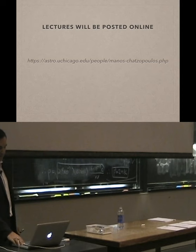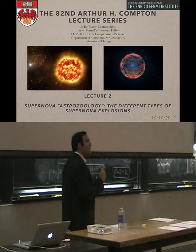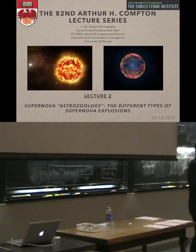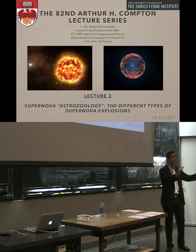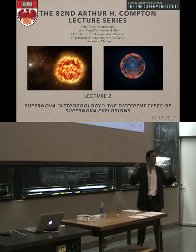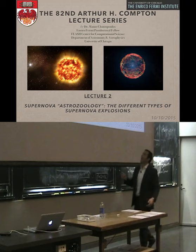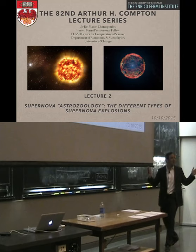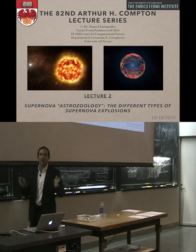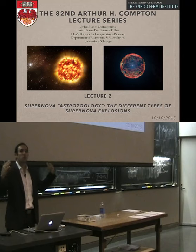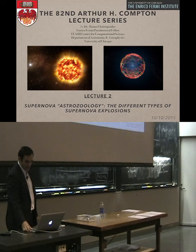Today we will talk about the amazing diversity that we see in supernova explosions. Last time we explored how we get to a supernova explosion. Today we will look at this beautiful multitude of different characteristics, different shapes, different geometries, different properties for different supernova explosions. I like to credit myself for coining the term 'astrozoology,' because zoology is a discipline where you study a variety of different kinds of animals. You can think of it as a supernova zoo, trying to understand the different properties of different kinds of supernova explosions.